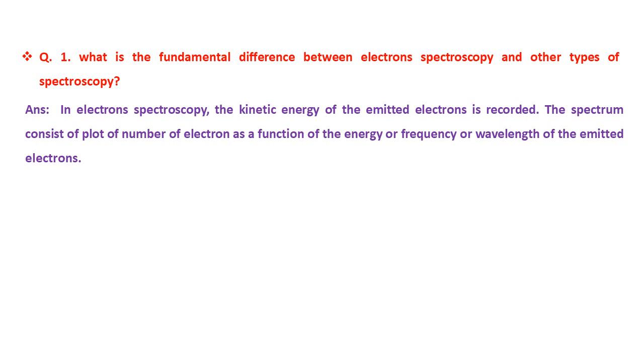There are some basic questions based on introduction and principle of XPS. First question is: what is the fundamental difference between electron spectroscopy and other types of spectroscopy? Answer is: in electron spectroscopy, the kinetic energy of emitted electrons is recorded. The spectrum consists of plot of number of electrons as a function of energy or frequency or wavelength of the emitted electrons.